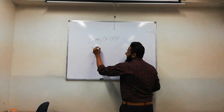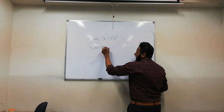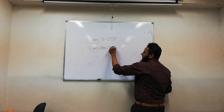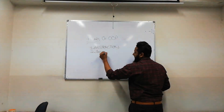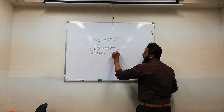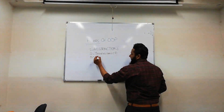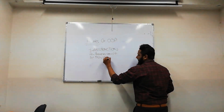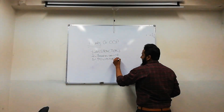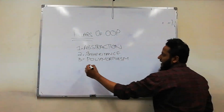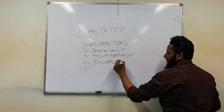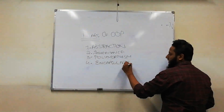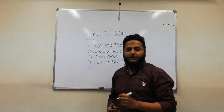The very first pillar is abstraction. The second pillar is inheritance. The third pillar is polymorphism. And the fourth pillar is encapsulation. So these are the four basic pillars of object oriented programming.